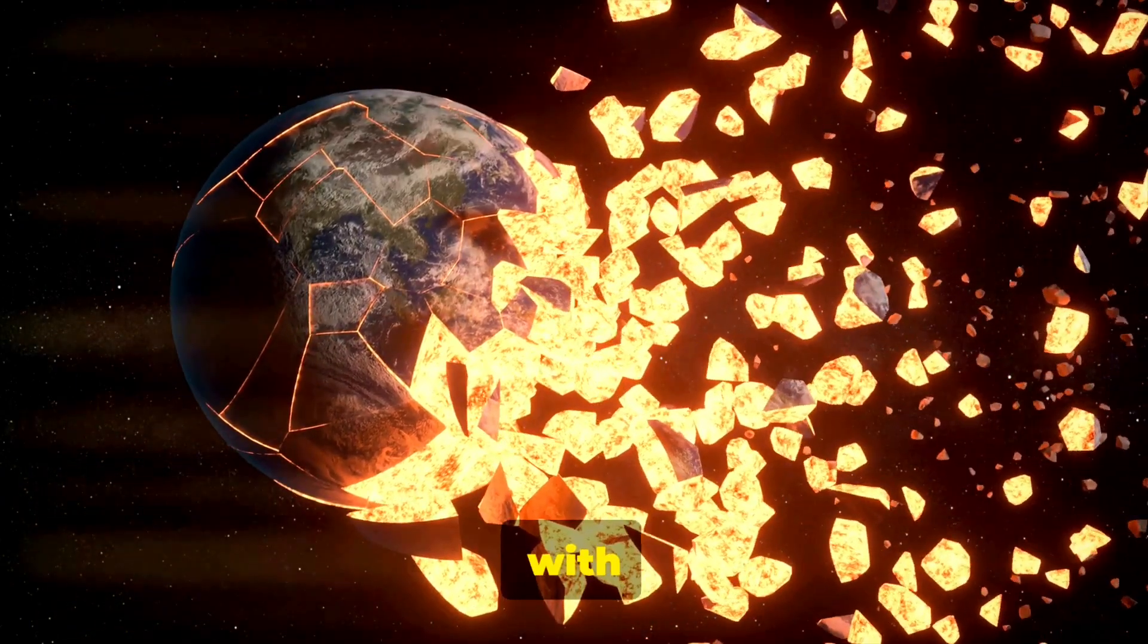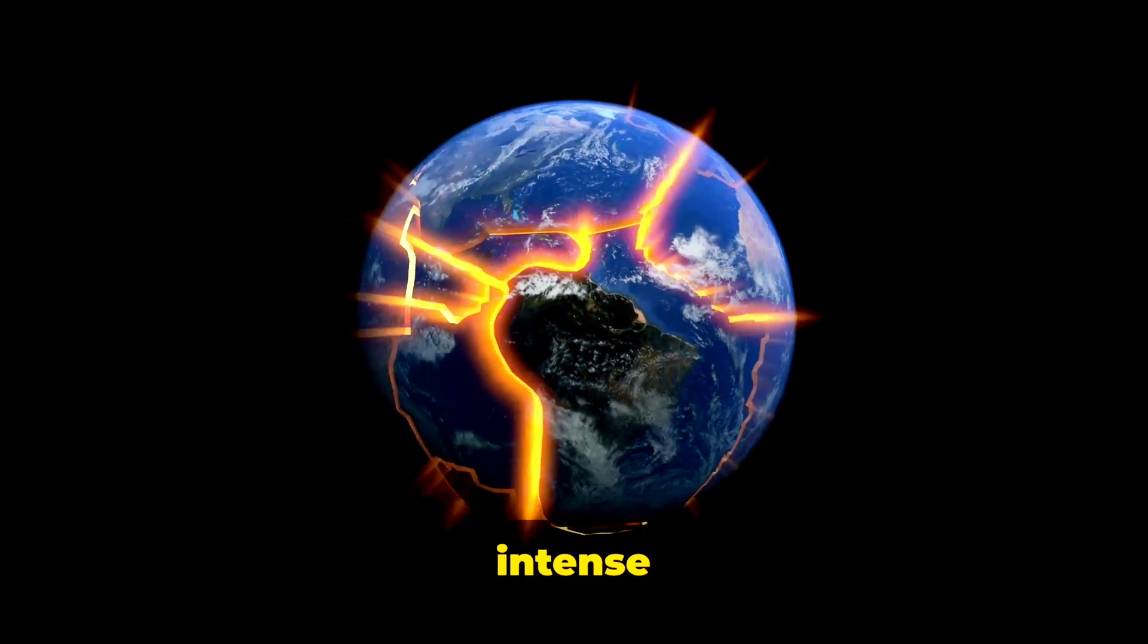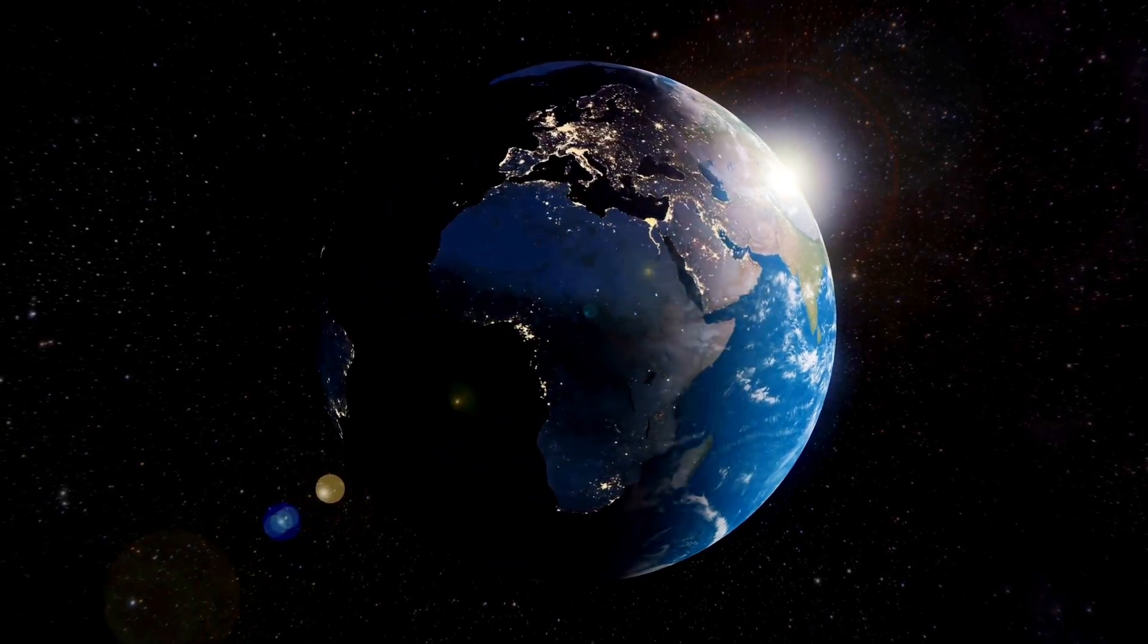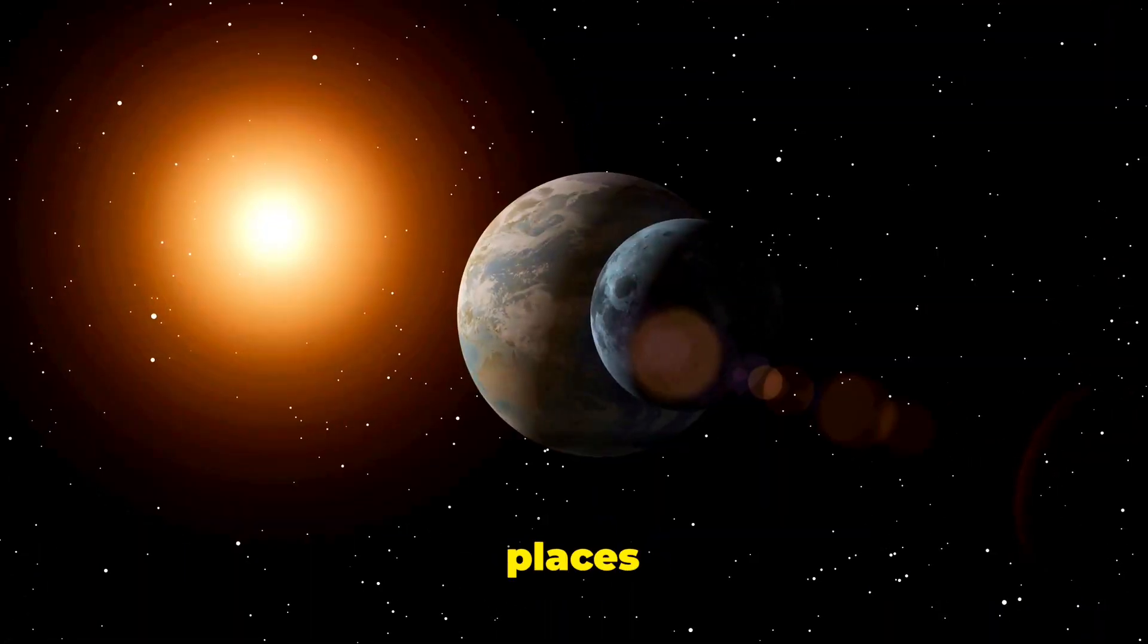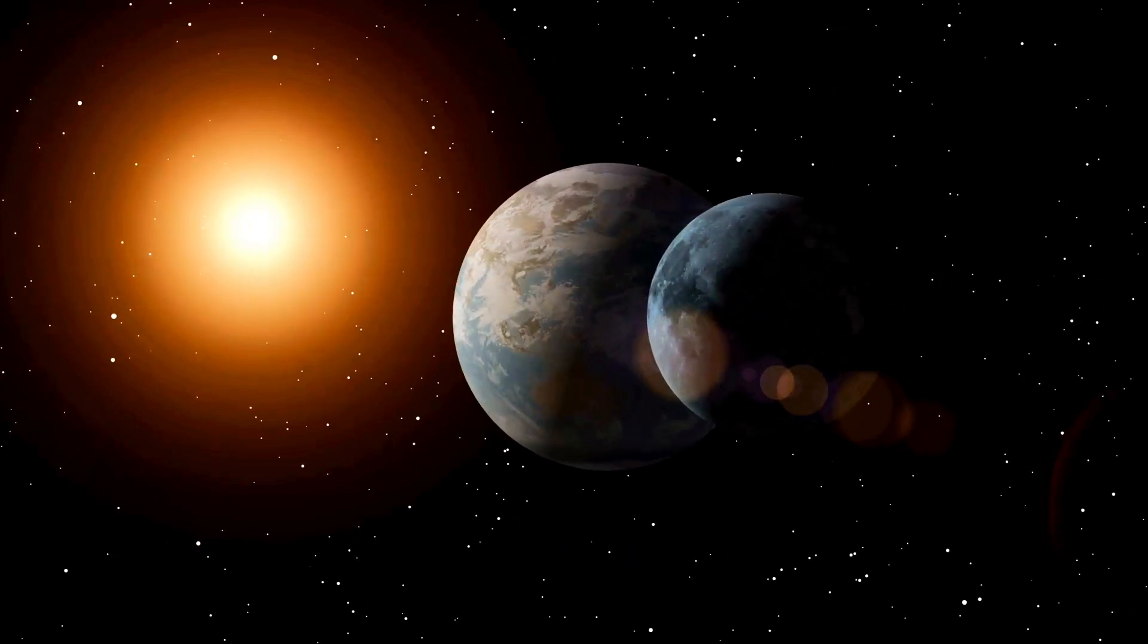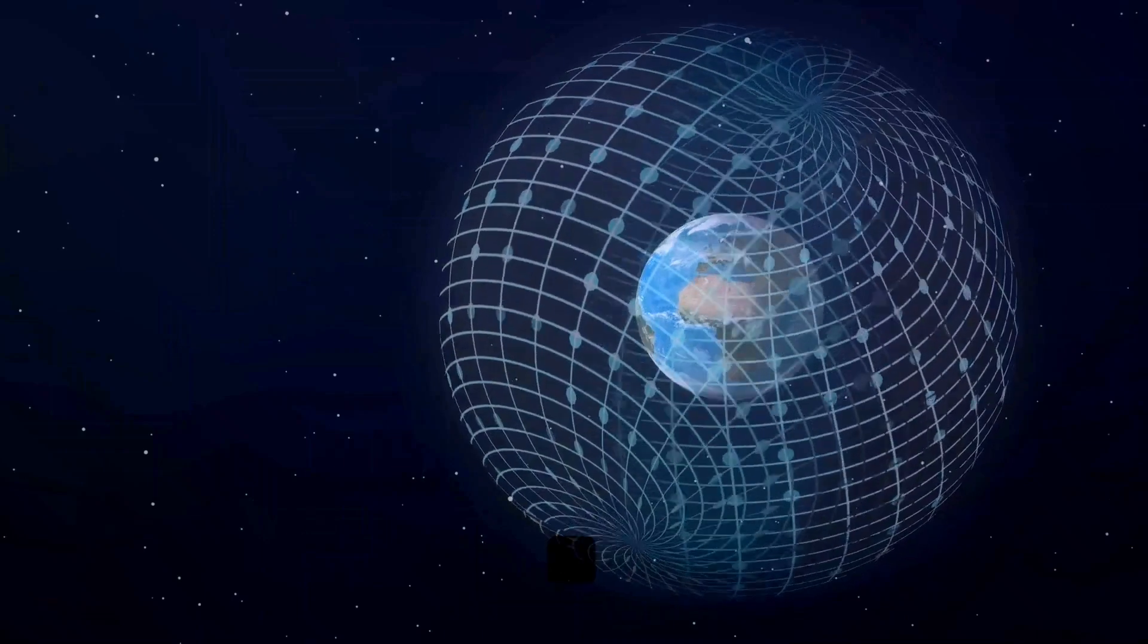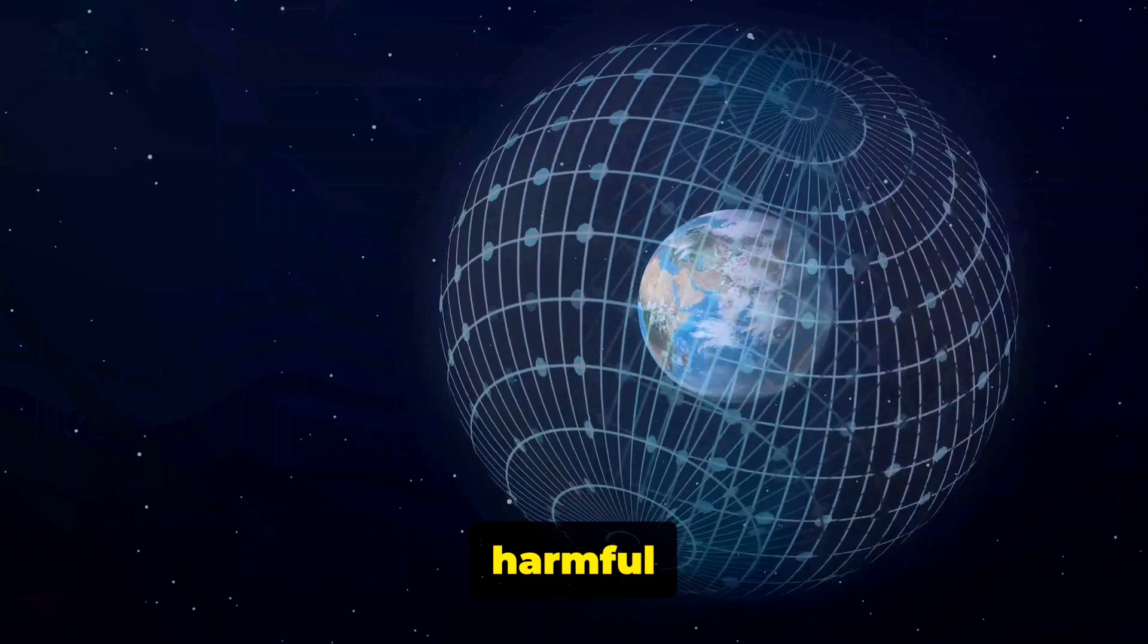It was a violent and chaotic time, with frequent collisions shaping and reshaping the young planet. Eventually, after a period of intense bombardment, the Earth cooled and a thin crust formed on its surface. But what set Earth apart from its planetary siblings? What made it suitable for life? The answer lies in a unique combination of factors. Firstly, Earth's distance from the sun places it in the Goldilocks zone, not too hot, not too cold, but just right for liquid water to exist. Secondly, its size and mass allow it to have a strong gravitational field, which holds onto a life-sustaining atmosphere. And finally, its molten core creates a magnetic field that protects the planet from harmful solar radiation.